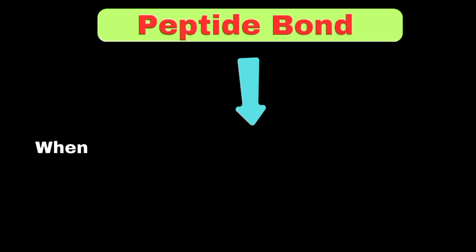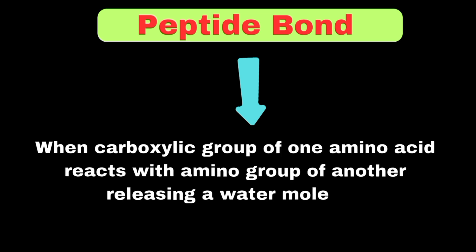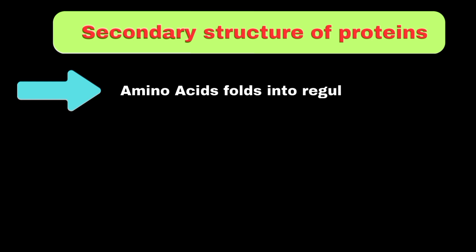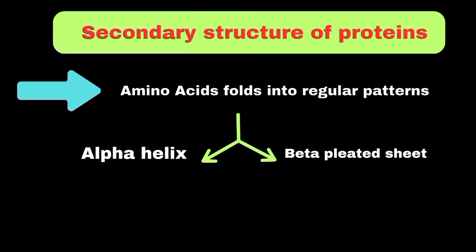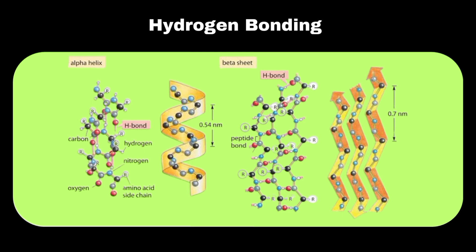A peptide bond is formed when the carboxyl group of one amino acid reacts with the amino group of another, releasing a water molecule. The secondary structure forms when parts of the amino acid chain fold into regular patterns. There are two main types: the alpha helix, where the chain twists into a spiral shape like a spiral staircase, and the beta pleated sheet, where parts of the chain lie parallel to each other like a folded paper fan. These structures are held together by hydrogen bonds between different parts of the chain.